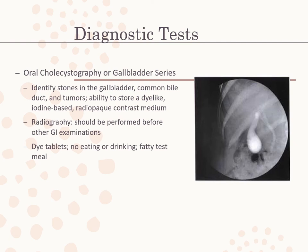Ultrasonography has mostly replaced oral cholecystography or gallbladder series because it is easier, quicker, as accurate, and does not expose clients to radiation. Ultrasound can also be safely used for clients with liver disease and jaundice. If ultrasound is unavailable or inconclusive, cholecystography can identify stones in the gallbladder or common bile duct and tumors or other obstructions. It determines the gallbladder's ability to concentrate and store an iodine-based radio-opaque contrast medium. Radiography of the gallbladder should be performed before other GI examinations using barium because residual barium tends to obscure the gallbladder image.